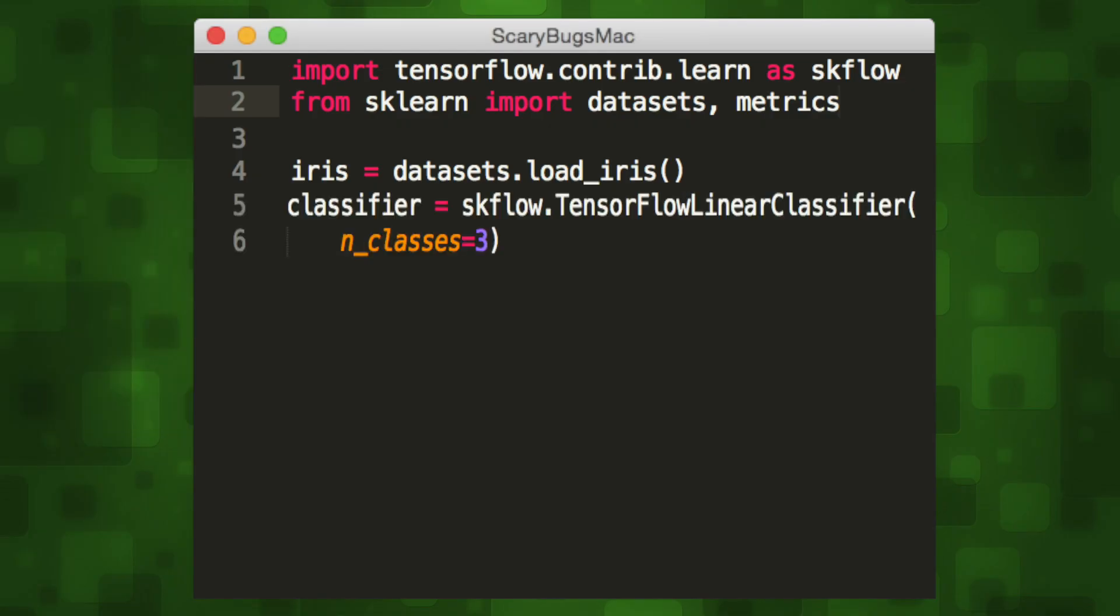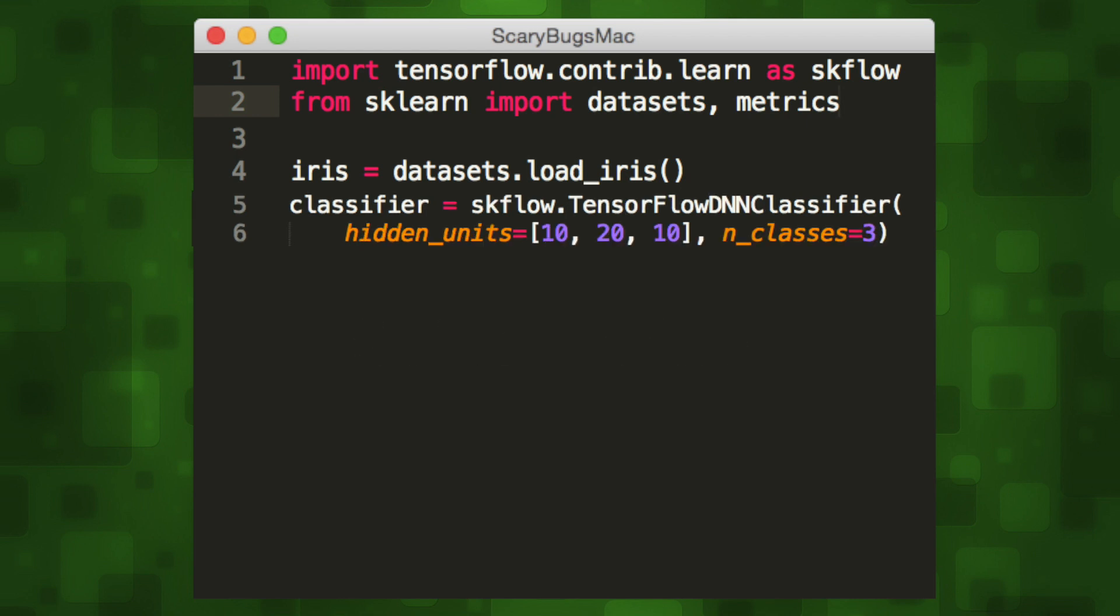We'll set the class parameter to 3. You can also easily just switch out the model with another one and see the difference in accuracy. It's just one line of code, like that's all it would take to use a deep neural net to classify this if we wanted to.